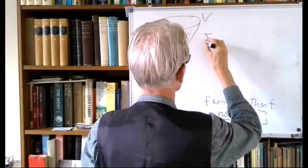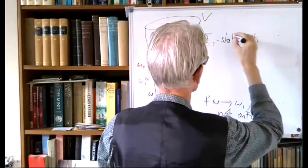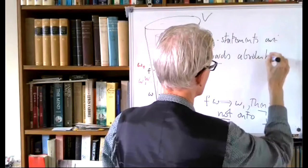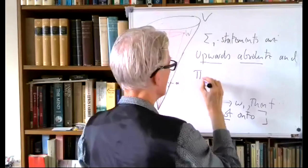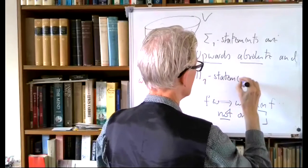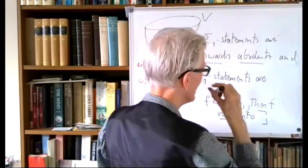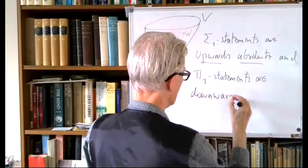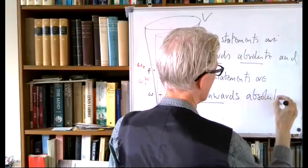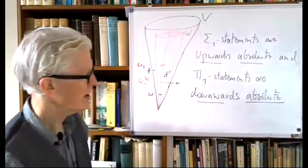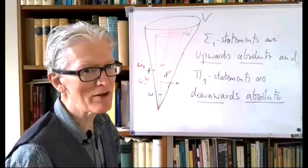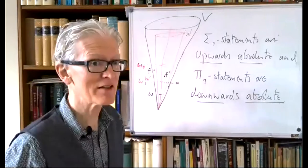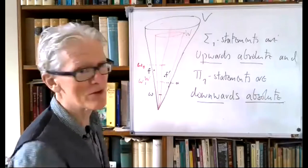To summarize: Σ₁ statements are upwards absolute — if true in W they are true in V. Π₁ statements are downwards absolute — if true in V they are true in W. The ideas themselves are simple: it's about where the witnesses for the quantifiers sit relative to W.